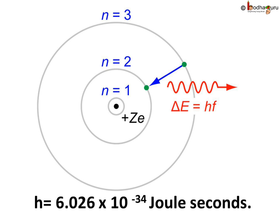Looking at the formula, delta E is equal to HF, we can easily say that less frequency means less energy.